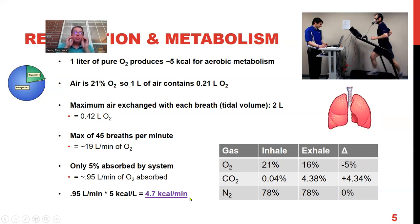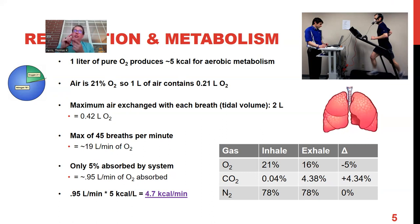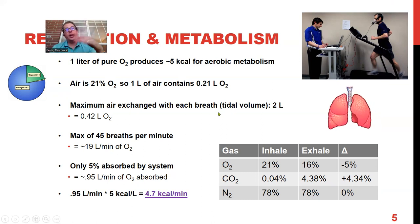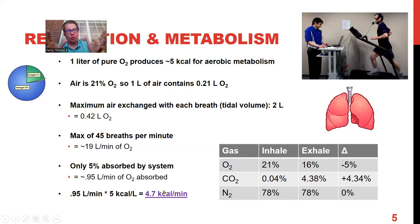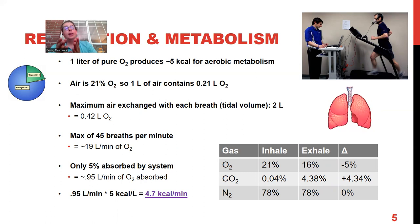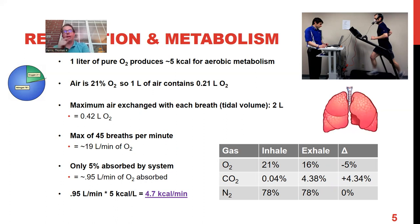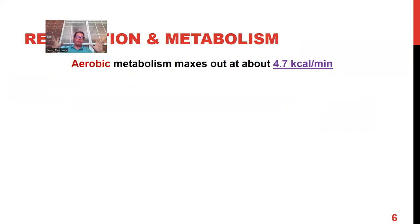Think of 4.7 kilocalories per minute as the maximum amount of energy that can be provided by aerobic metabolism, because you can't breathe any faster or deeper. At maximum breathing — deeply and quickly — our maximum ability to replenish ATP via aerobic means is 4.7 kilocalories per minute. That becomes our magic number.